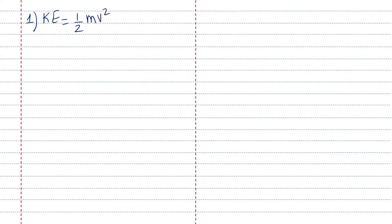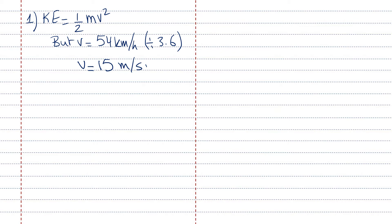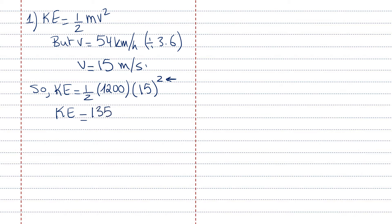Starting with part one: kinetic energy equals half mv squared. Mass is 1200 kg, and v is 54 km/h, so dividing by 3.6 gives v equals 15 meters per second. Kinetic energy equals half times 1200 times 15 squared. Pay attention — a very common mistake is forgetting the square. So KE equals 600 times 225, which equals 135,000 joules.